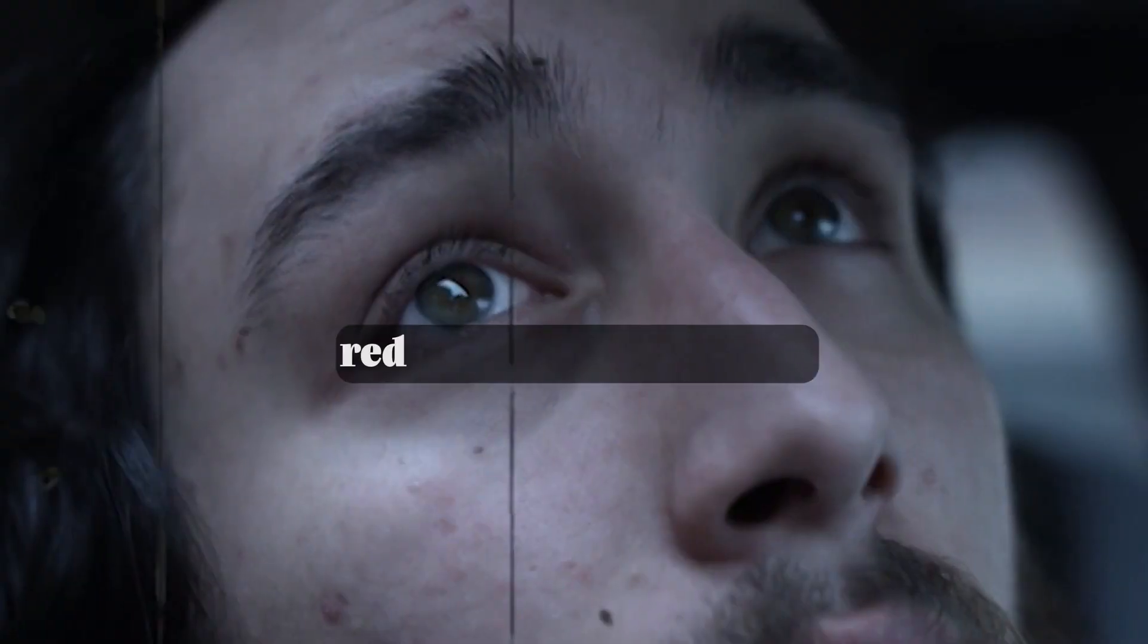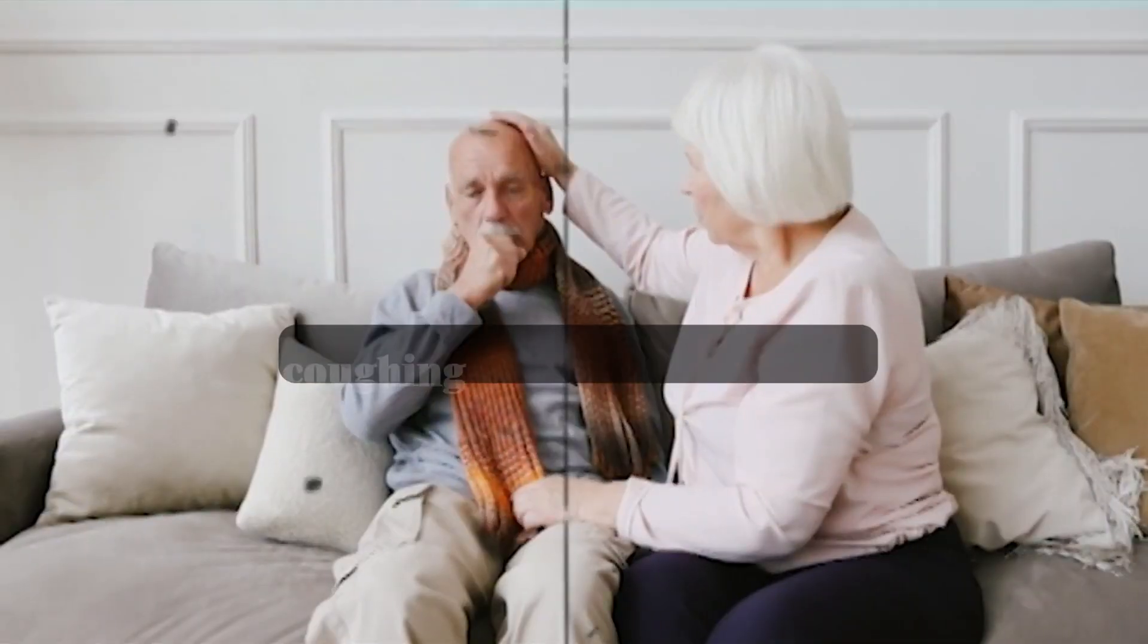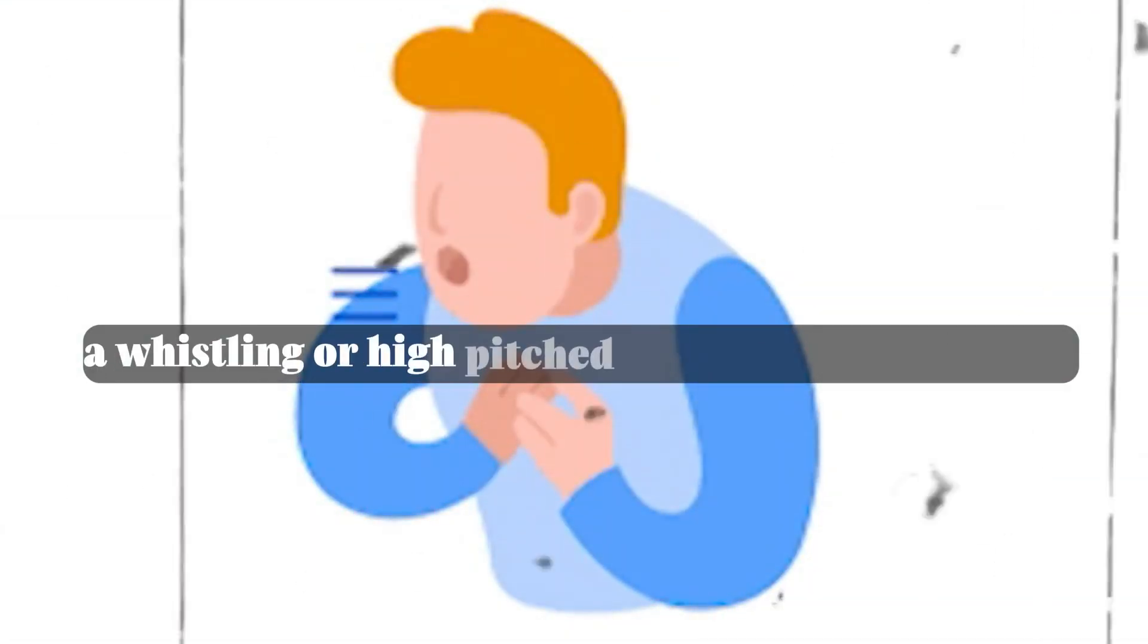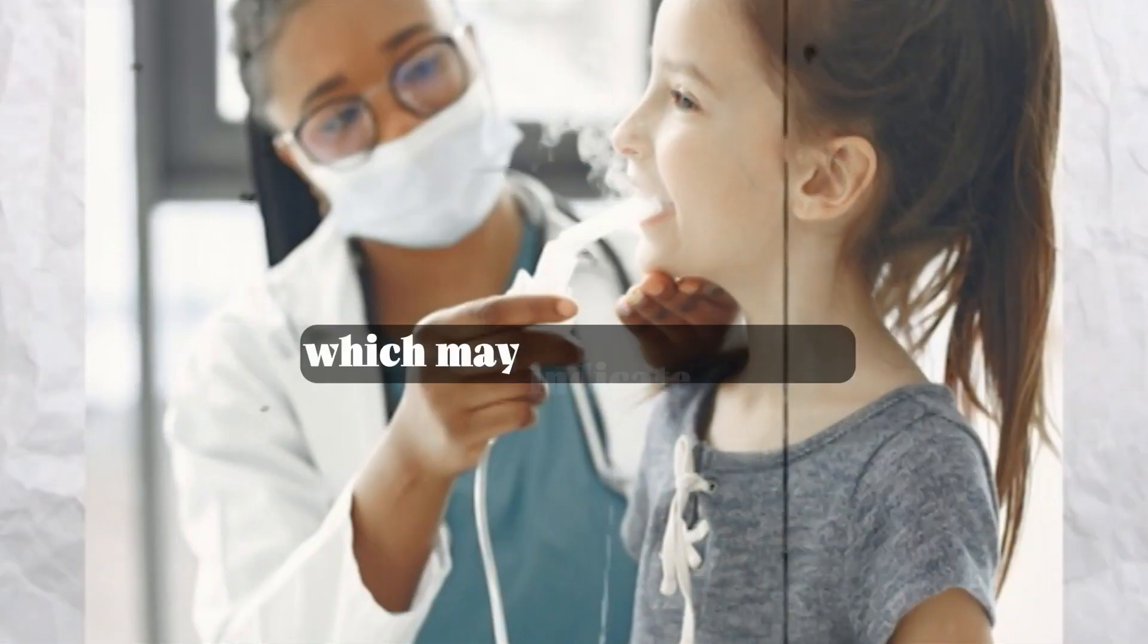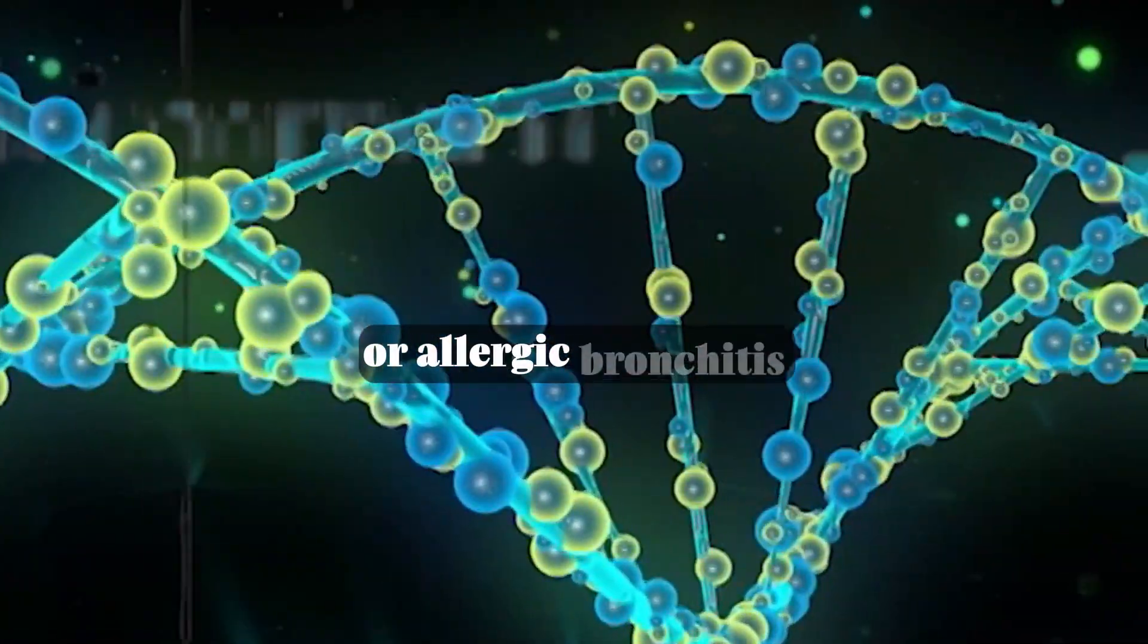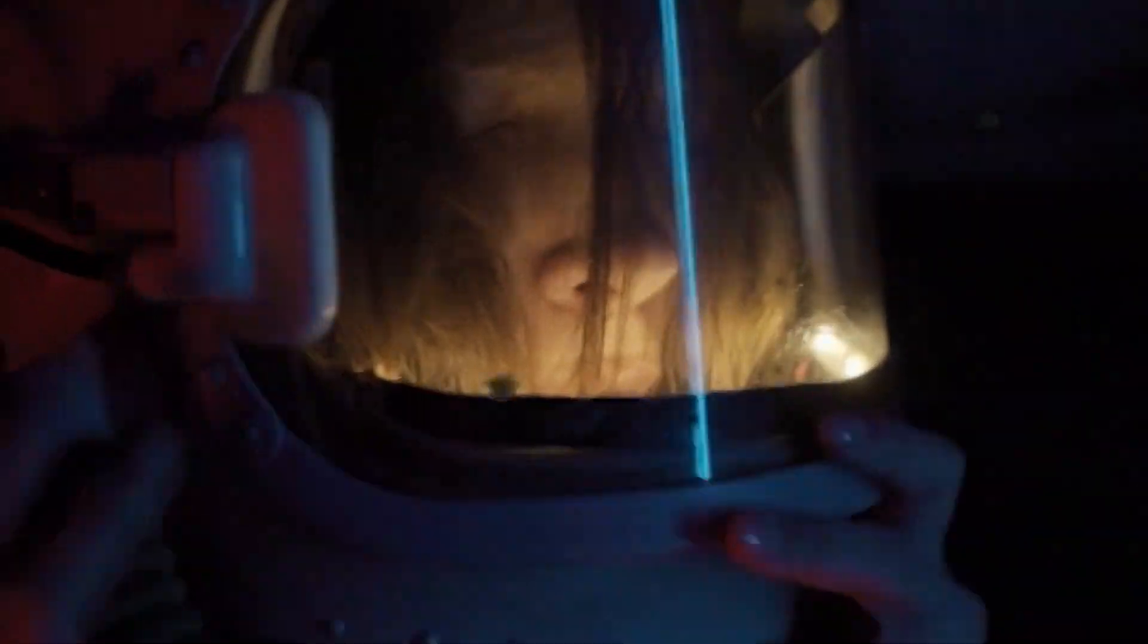Sneezing: frequent and repetitive sneezing. Runny or stuffy nose, often referred to as allergic rhinitis or hay fever. Itchy or watery eyes: red, itchy, and teary eyes. Coughing: persistent coughing, especially in response to allergens like pollen or dust. Wheezing: a whistling or high-pitched sound when breathing, which may indicate asthma or allergic bronchitis. Shortness of breath: difficulty breathing, which can occur during severe allergic reactions.